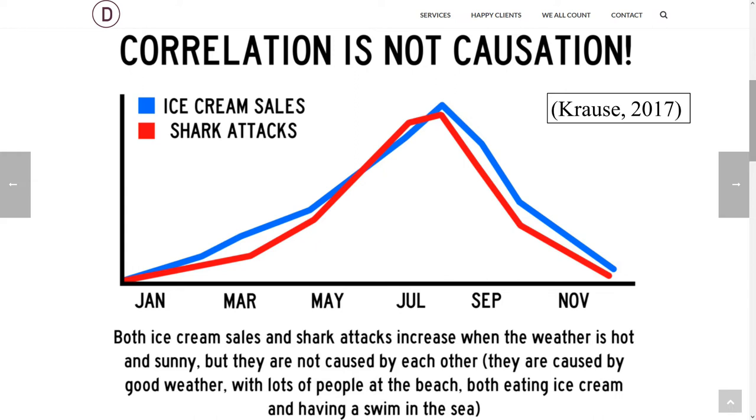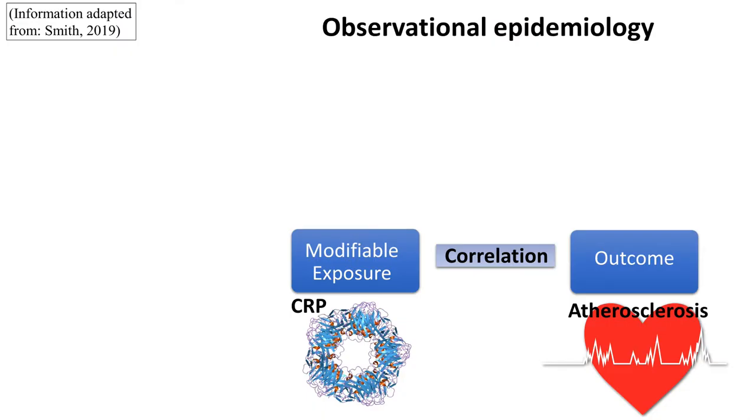The other problem you face in traditional epidemiology is what's known as reverse causation. So sticking with our earlier example, C-reactive protein is produced in your liver in response to inflammation. Now atherosclerosis is an inflammatory condition and as such it would increase your blood levels of C-reactive protein. So again, looking at the population, you'd see the correlation between higher levels of C-reactive protein and CVD incidence and you might wrongly infer that it's the C-reactive protein causing the CVD when in fact the reverse is true.